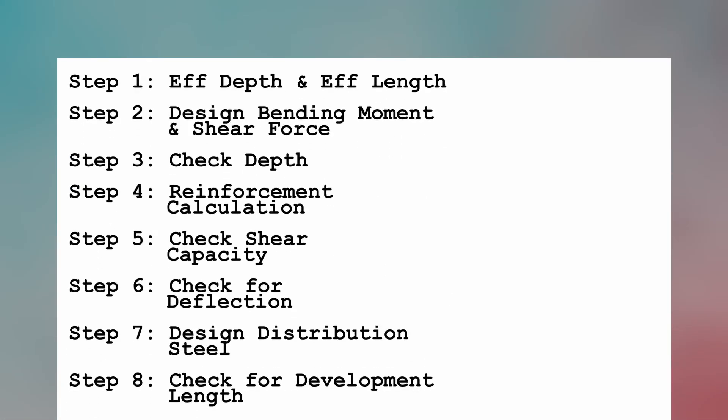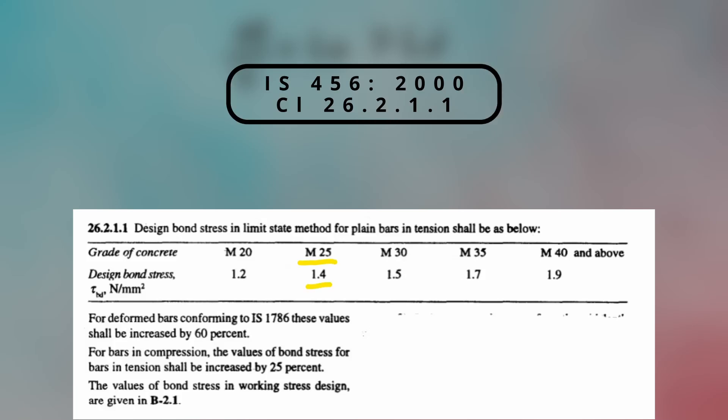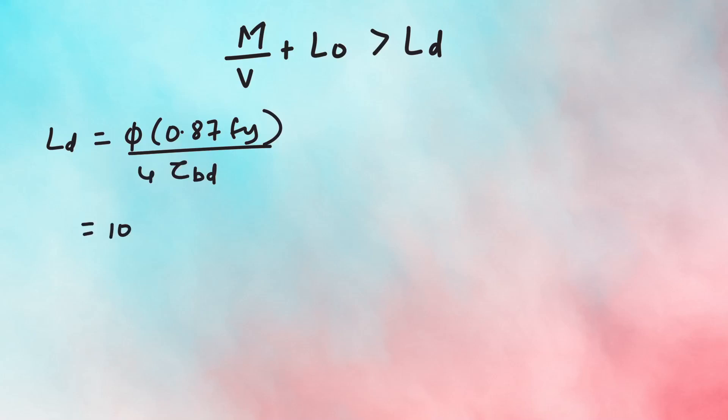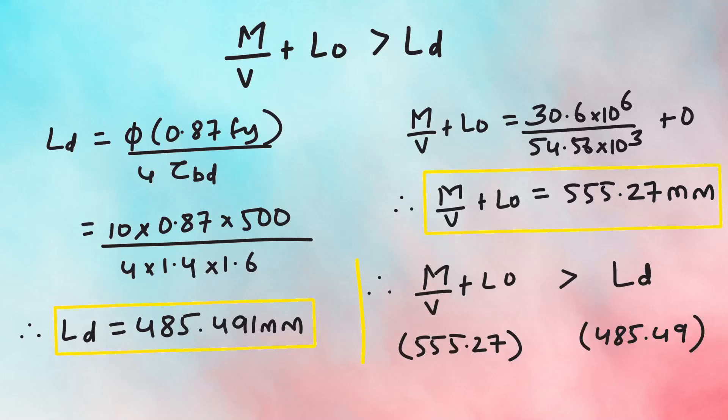Step 8 is to check for development length. Here we check whether M by V plus L0 is greater than Ld. Ld is calculated as per clause 26.2.1 as phi into sigma s divided by 4 tau BD, where phi is the nominal diameter of bar, sigma is the stress in bar at design load taken as 0.87 Fy, and tau BD is the bond stress calculated as per clause 26.2.1.1. For M25 grade of concrete tau BD equals 1.4, and additionally as per IS 1786 these values shall be increased by 60% for deformed bars. So Ld now equals to 10 into 0.87 into 500 divided by 4 into 1.4 into 1.6 which on solving equals to 485.491 mm. Comparing this value with M by V plus L0 which when solved equals to 555.27 mm, this value is greater than Ld, hence the slab is okay in development as well.